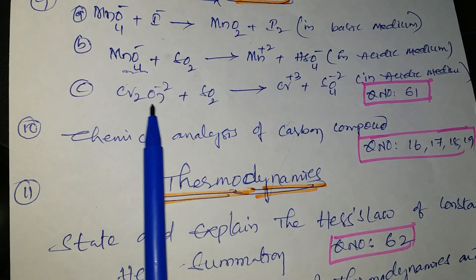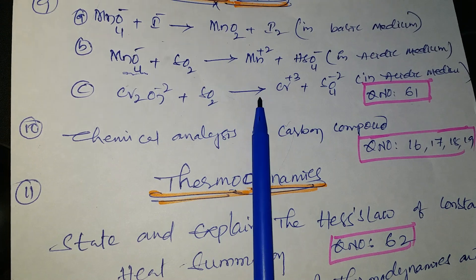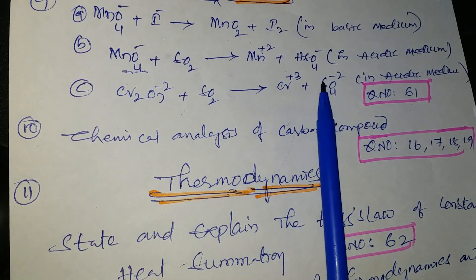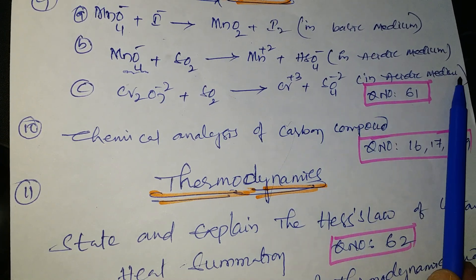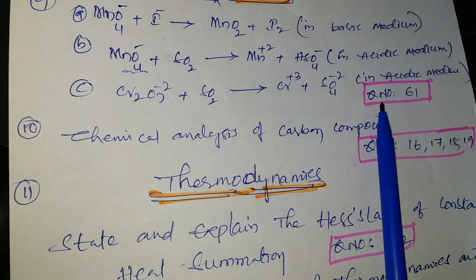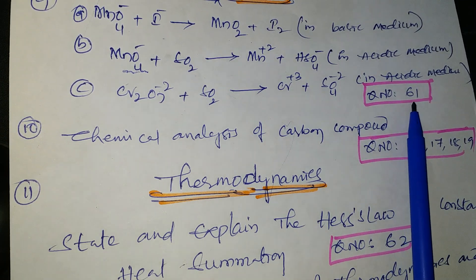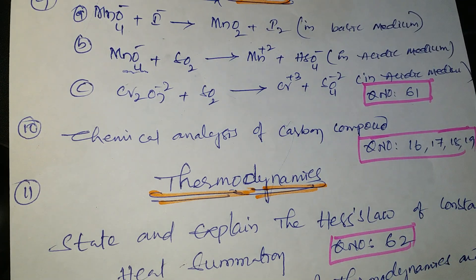Next: Cr2O7²⁻ + SO2 → Cr³⁺ + SO4²⁻ in acidic medium — also question number 61. These three questions all belong to question number 61 from the Telugu academic textbook and other material in the stoichiometry lesson.